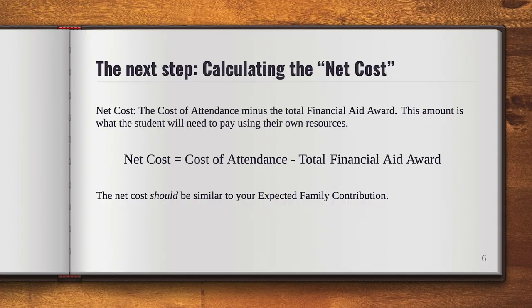Now we're going to look at the net cost. The net cost is essentially what you and your family will actually have to pay using your own resources to study at the school. We calculate it by taking the cost of attendance minus your total financial aid award. For example, if your cost of attendance is estimated at $30,000 and your total financial aid package is $28,000, then your net cost is $2,000. You and your family need to figure out how to pay that $2,000 — through money earned working or savings. Typically, the net cost should be similar to your expected family contribution; if it's not, contact your financial aid office.